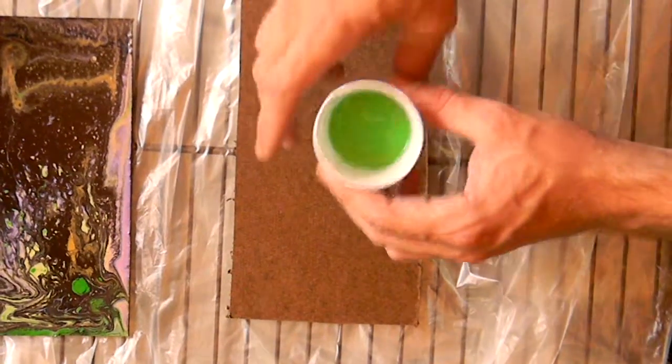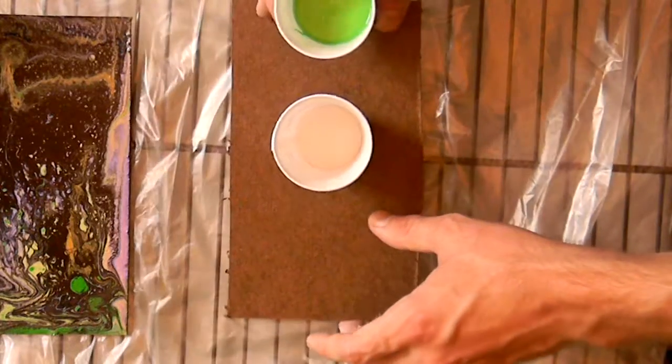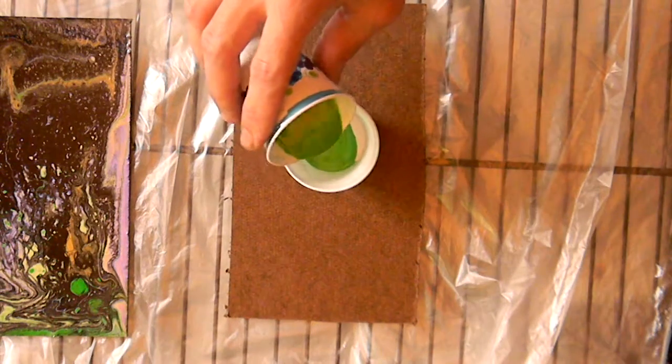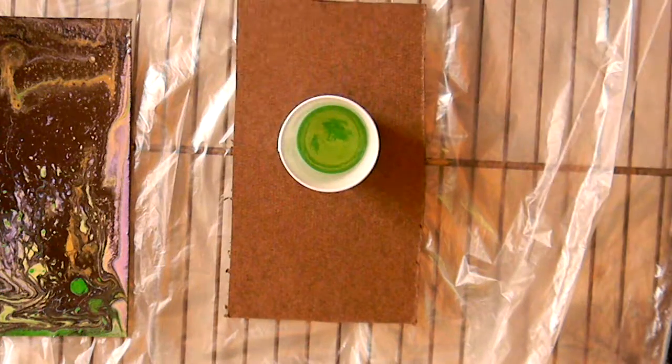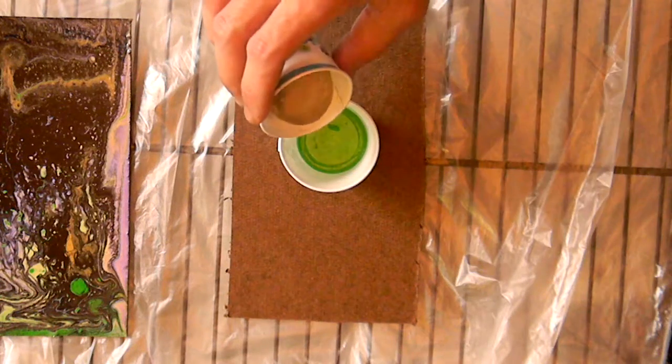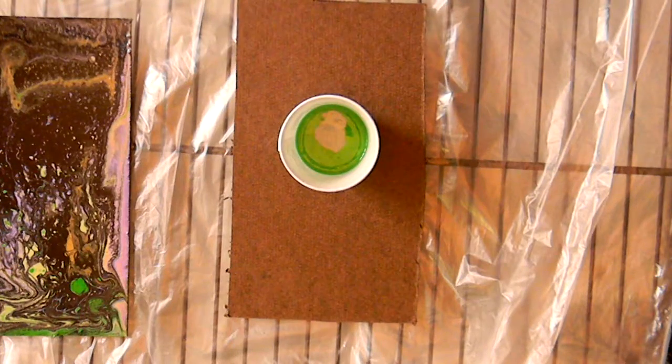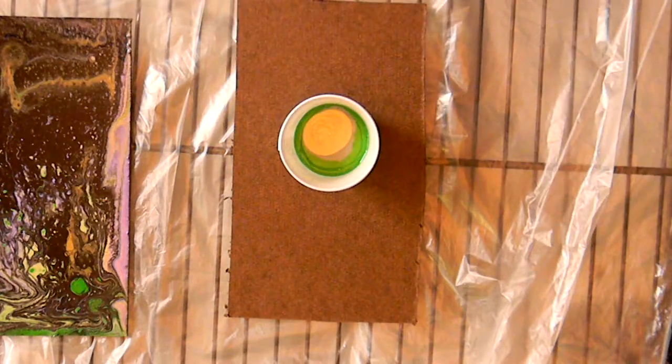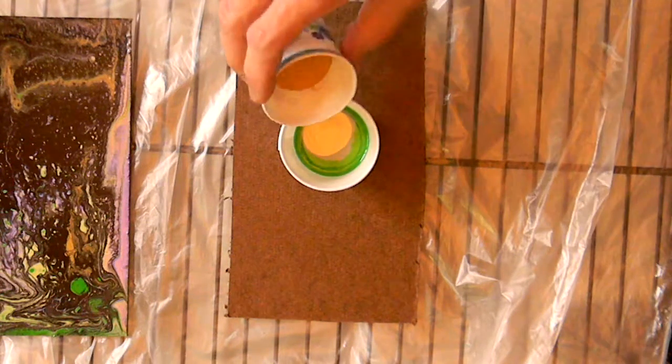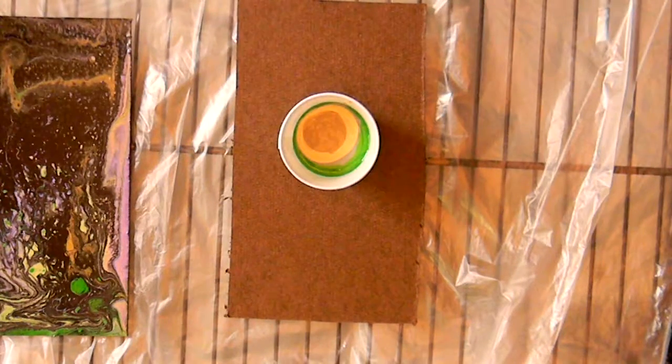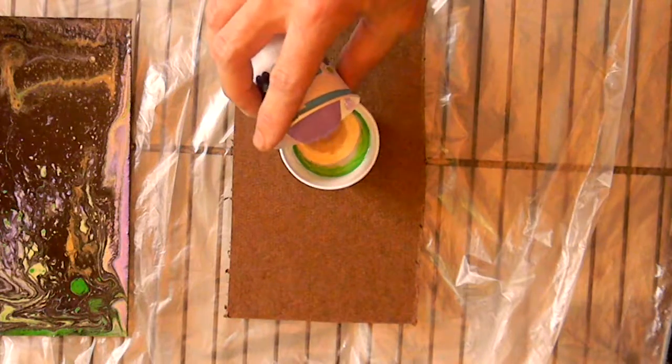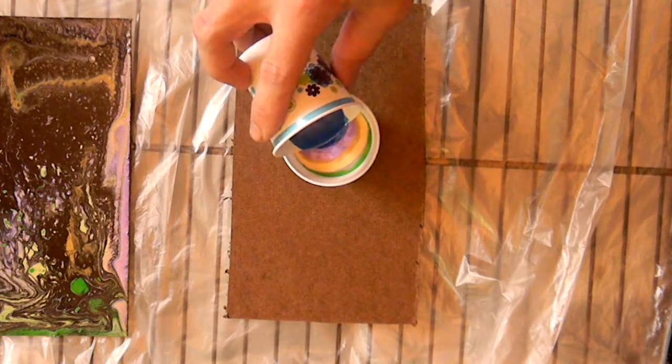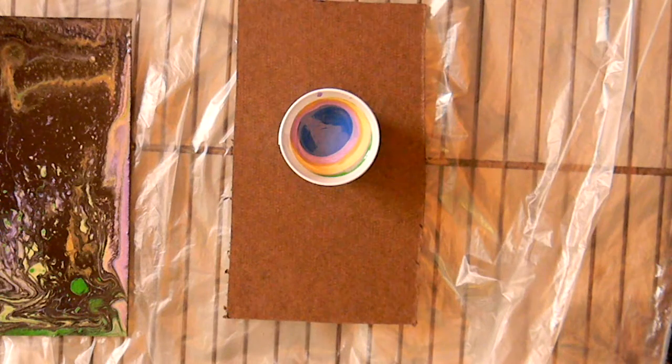Alright, now this is my cup for pour. I'm going to start out using the green, since I just made that one and it's the lightest color. So I'm going to pour it in. Next I have gold, gold Inca, antique gold, metallic purple, blue, and I think that's about as much as my cup can hold for this canvas.